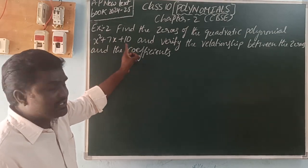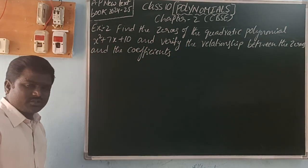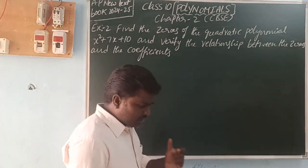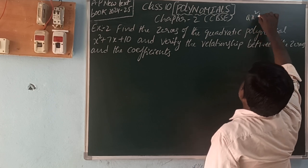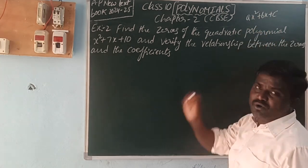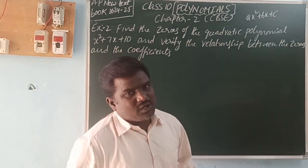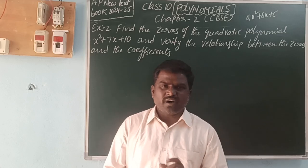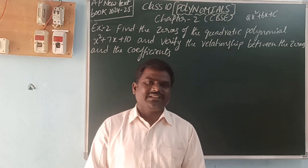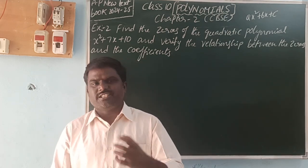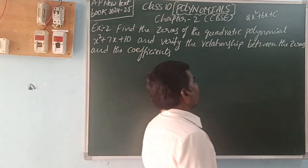This is a quadratic polynomial because the degree is 2. For a linear polynomial there is 1 zero; for a quadratic polynomial, 2 zeros; for a cubic polynomial, 3 zeros; for a biquadratic polynomial, 4 zeros. In general, a degree-n polynomial has n zeros. So this quadratic polynomial has 2 zeros — let us call them alpha and beta.